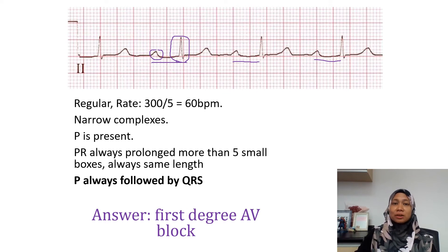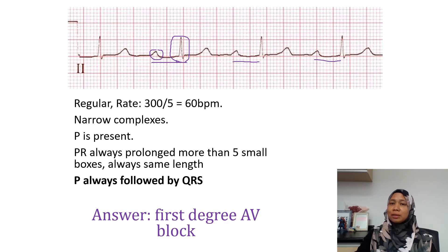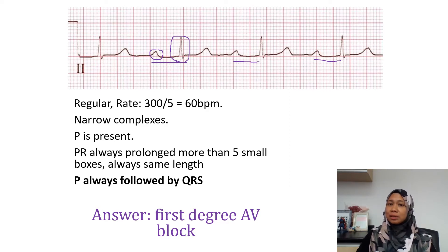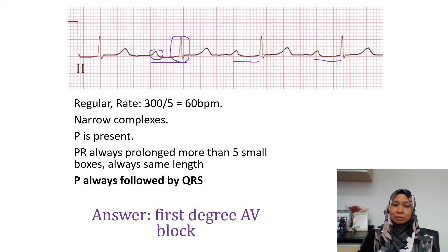So this is a first degree AV block. In first degree AV block, we can see that the PR is prolonged, but the P wave is always conducted — meaning that there are no dropped beats or missed beats.